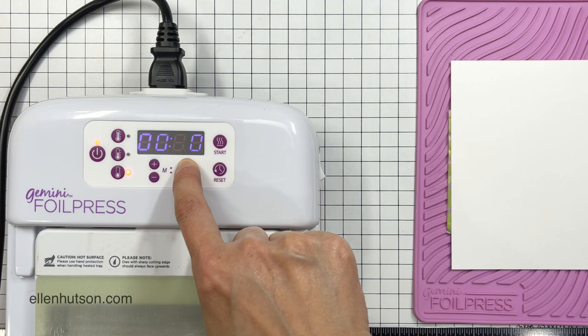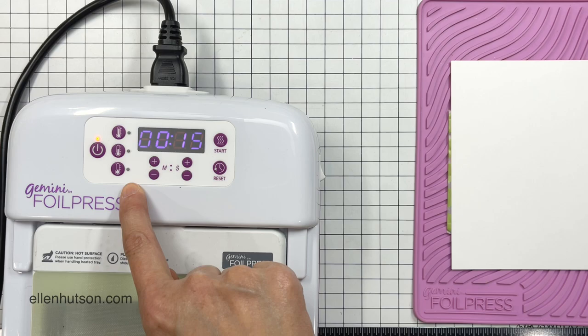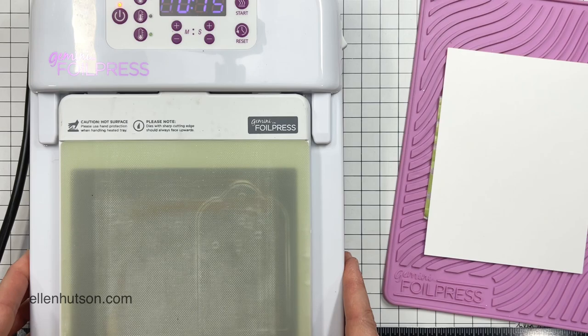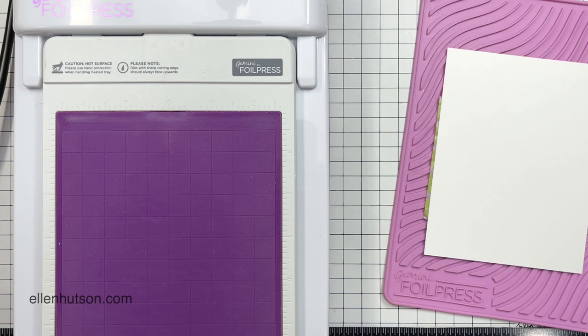Now I'm going to prep the platform. This is the Gemini foil press. I turned on the power button on the right and then the power button on the control panel, which turned on the lowest heat setting. I set my timer to 15 seconds.